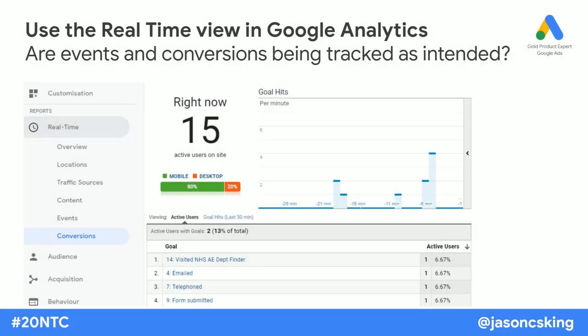When you're tracking your conversions and not quite sure if you've set them up right, use the real-time view in Google Analytics. You can click around your own website, make a small donation, fill out a form, or sign up for a newsletter, then go into real-time view in Analytics and see whether it actually registered. In the example I'm showing here, I can see 15 users on the website right now — one has clicked an email address, one a telephone number, one has submitted a contact form, and one clicked a link to an NHS website that we really want to send people to.